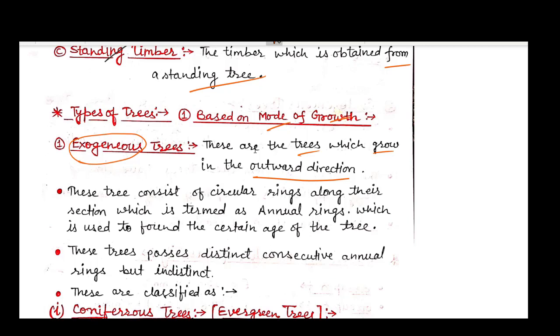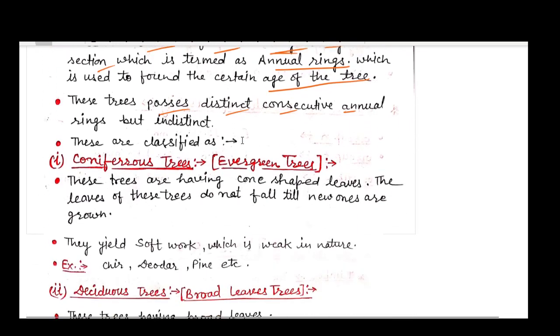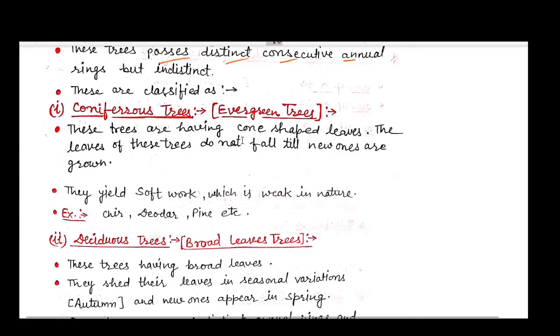These are known as annular rings, which help us determine the age of a tree. The circular rings along their section are termed annular rings. These trees possess distinct consecutive annual rings and are further classified into coniferous trees and deciduous trees.